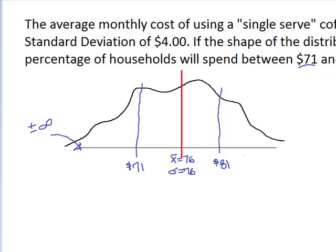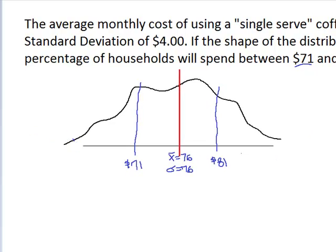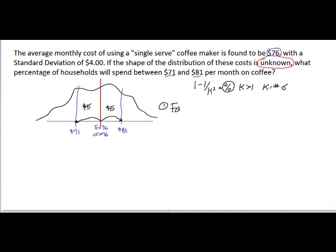So the first step is how far did I move? I moved from $76 to $81 this way and I moved from $76 to $71 this way. So how far is that? Well, $76 minus $81 tells me I moved $5 up. The distance from $71 to $76 is $5 down. So first, how far? I moved $5.